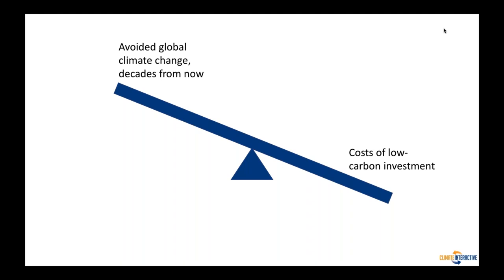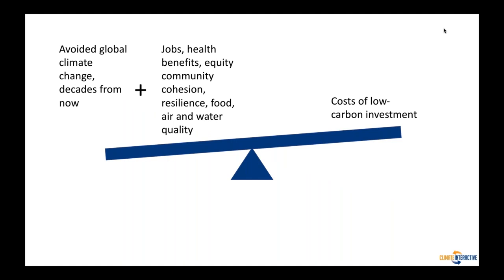On the one hand, there were costs that had to be paid now for low-carbon investment — for the infrastructure for new energy systems — and the reward seemed really distant: avoided climate change, a long time in the future. We felt this wasn't a complete picture, and that we might actually be able to make bigger progress on climate if we could focus on a more complete picture — one where those same costs are balanced out not just by long-term global benefit, but also by really local, immediate benefits in terms of jobs, health, equity, community cohesion, resilience, food quality, air, and water quality.